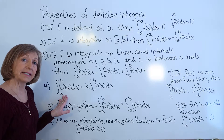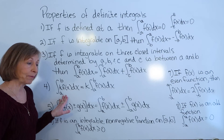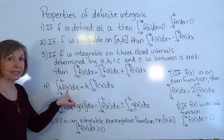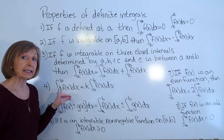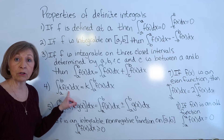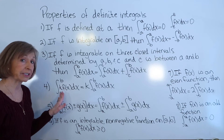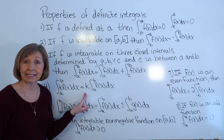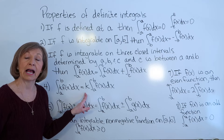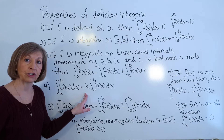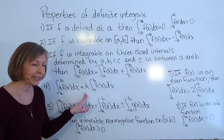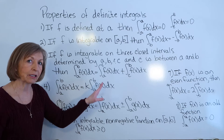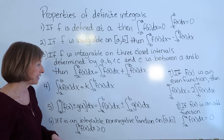Property 4: for the definite integral from a to b of k times f of x dx, if you have a constant multiple in front of your function, you can pull that constant factor out in front of the definite integral, just like with indefinite integrals, and then multiply the values together.